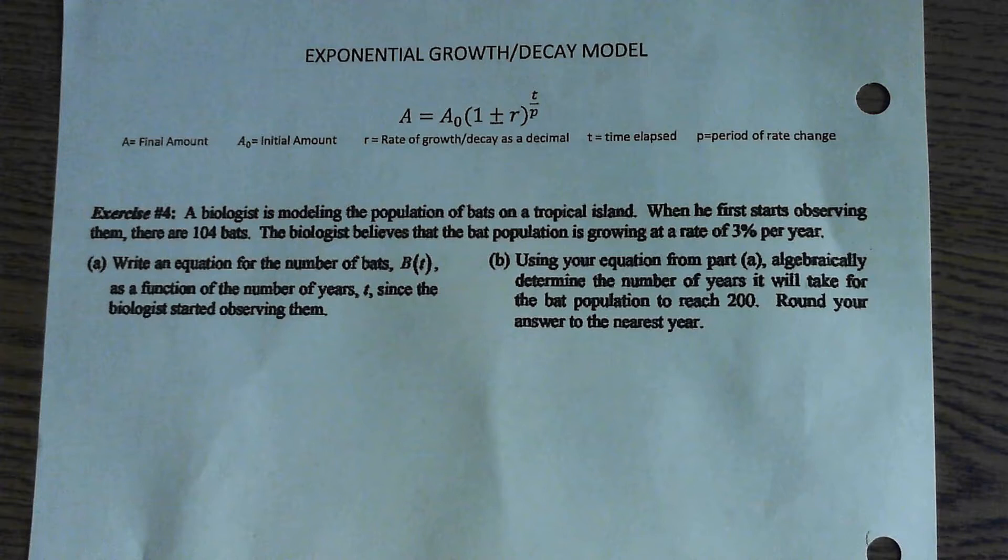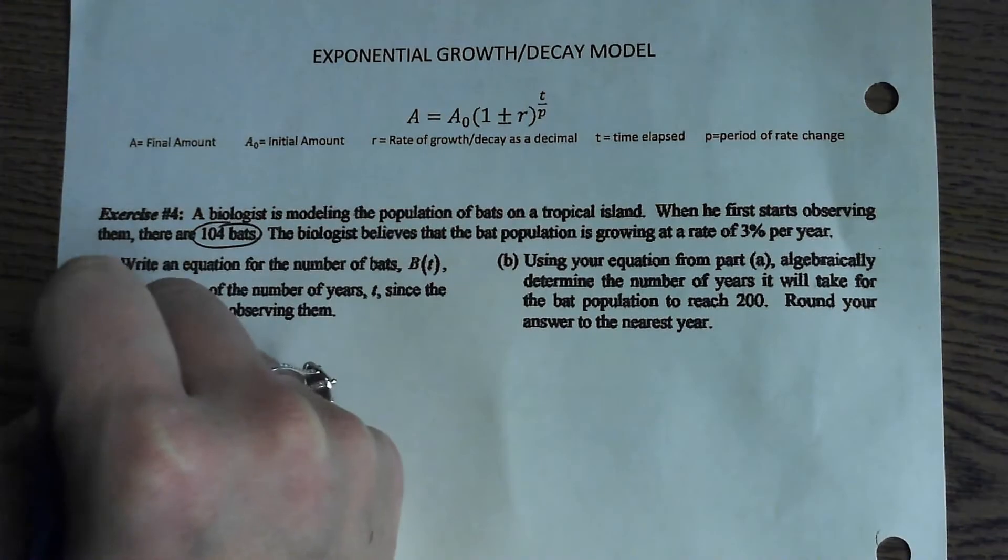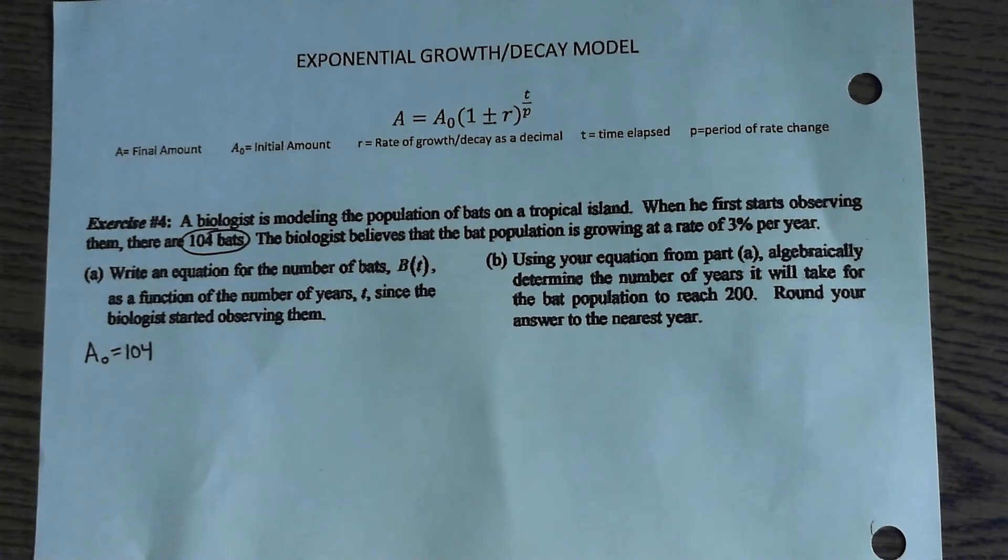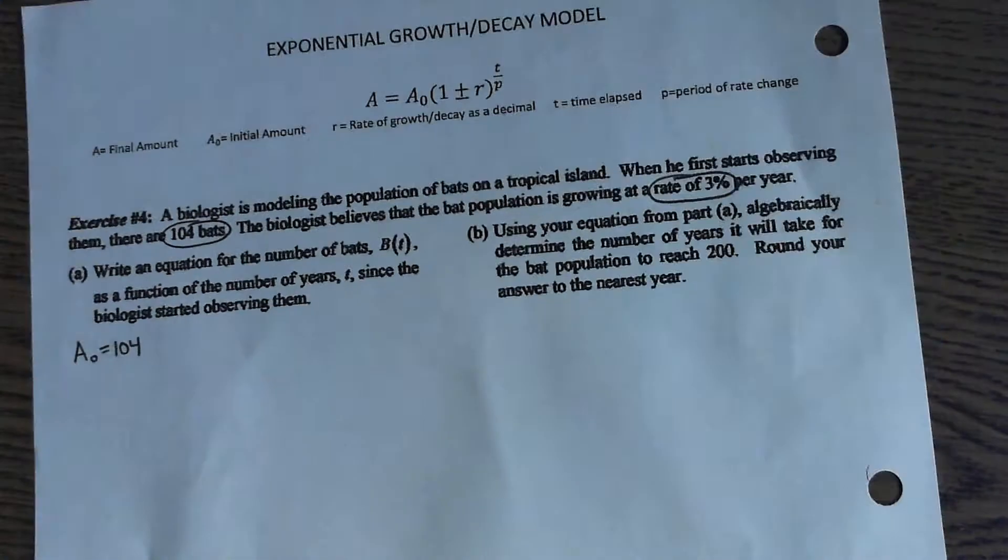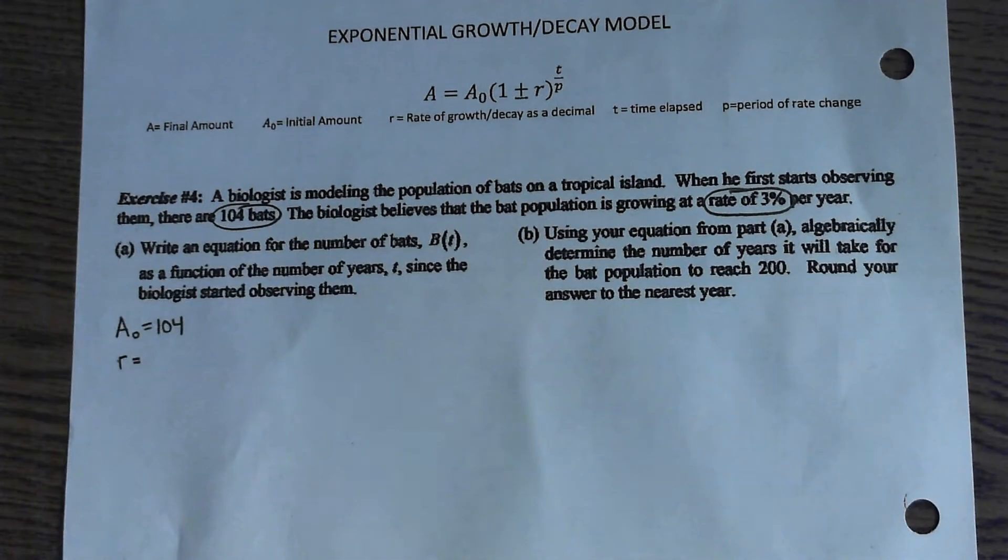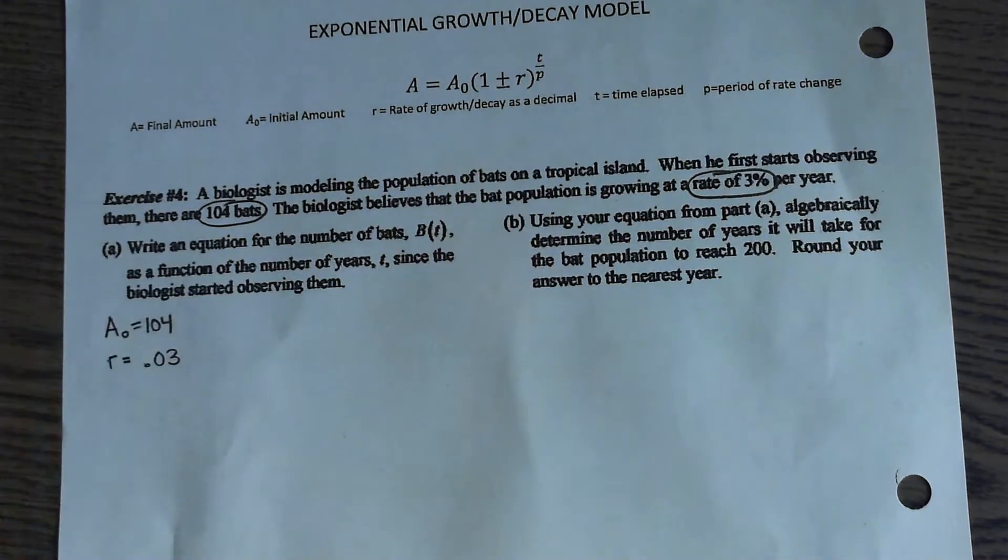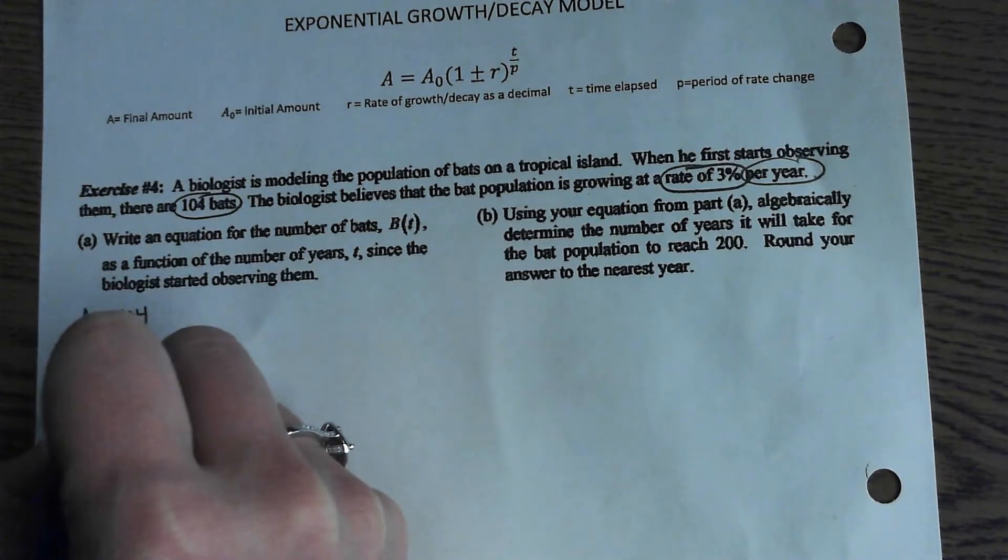So, in number four, a biologist is modeling the population of bats on a tropical island. It's just a little bit of fluff to give you context. No numbers can be pulled from that. When he first starts observing them, there are 104 bats. That's your A sub zero. That's your starting population. The biologist believes that the bat population is growing at a rate of 3%. So, how do you change a percent to a decimal? What's 3% as a decimal? 0.03. Not 0.3. 0.3 would be 30%. 0.03. And per year tells you that P equals one year.